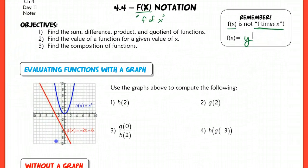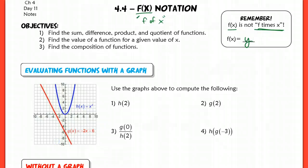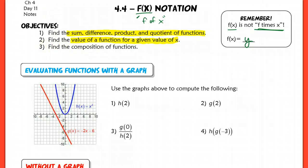We're going to be doing various things with functions. We're going to be finding the sum, the difference, the product, and the quotient, which is pretty simple — that first objective is pretty easy. The second objective, which we'll get into almost right away, is evaluating a function for a particular given value. Our third objective is the composition of functions, which is the hardest.